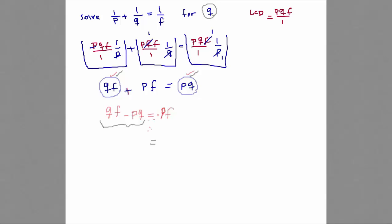The correct answer would be factor the Q. You have to factor the Q out. You want to isolate Q, so you need to factor the Q out. If I factor a Q on the left hand side, what do I get inside the parentheses? F minus P. Right, F minus P.